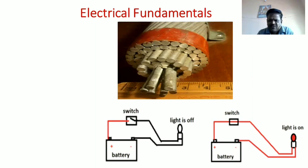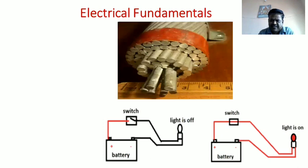An insulator is a material which has very few free electrons, which offers more resistance to the flow of current — it does not allow current to pass through its body. Examples include rubber, paper, cloth, and plastic. A semiconductor is a material which has both the characteristics of a conductor and an insulator — it lies in between; neither a conductor nor an insulator. There are only two semiconductors used in industry: germanium and silicon.